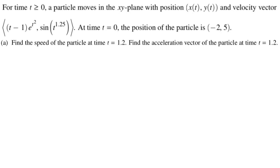At time t equals zero, the position of the particle is negative two five. Find the speed at t equals 1.2 and the acceleration at t equals 1.2. All right, so speed is the magnitude of the velocity.